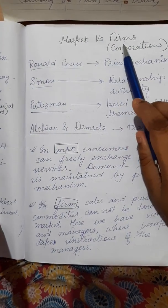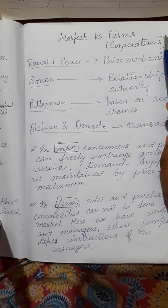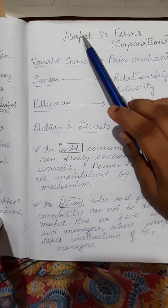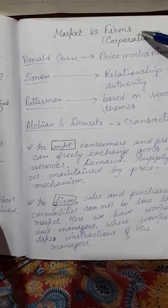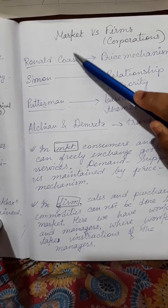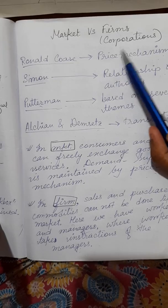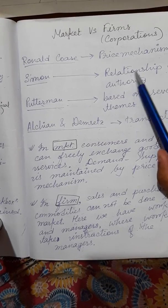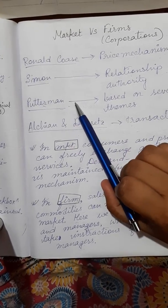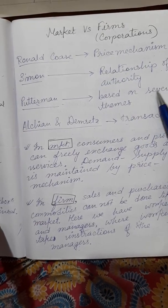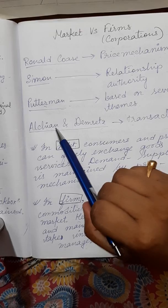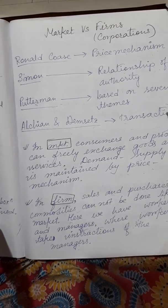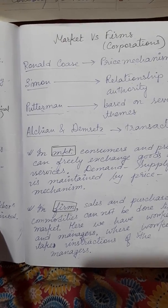Next, we have the difference between markets and firms, also known as corporations. Many economists have differentiated markets and firms on different bases. According to Ronald Coase, markets and firms can be differentiated based on price mechanism. Simon differentiated them based on the relationship of authority. Hooterman differentiated them based on seven different themes. Alchian and Demsetz differentiated them based on transaction costs.